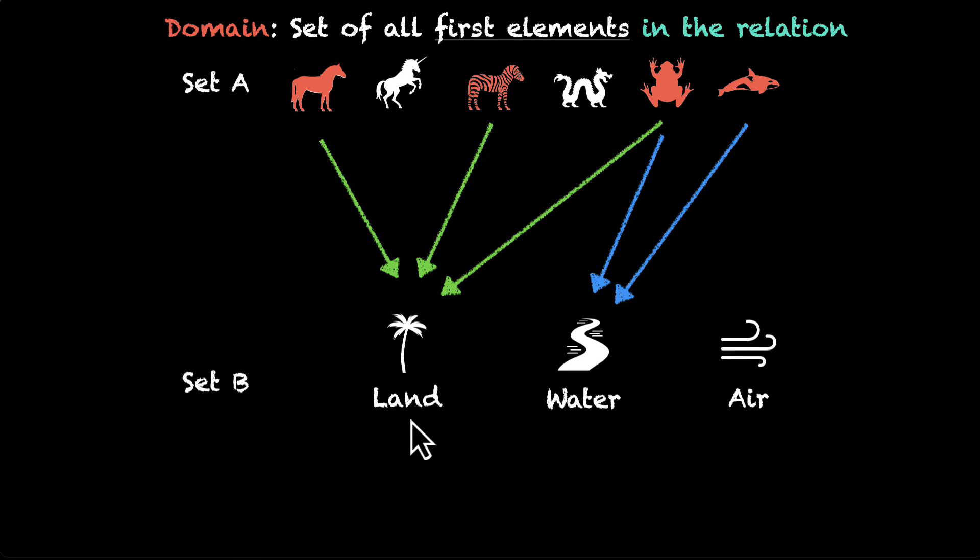And what about set B? We have land and water. These two are related. Air is not related. In this example, these two will be part of something that we call range. So range is the set of all second elements in the relation. Why first and why second?